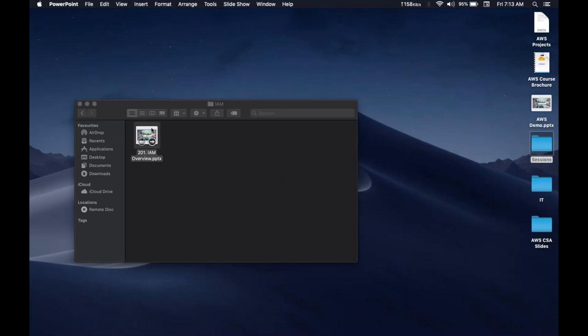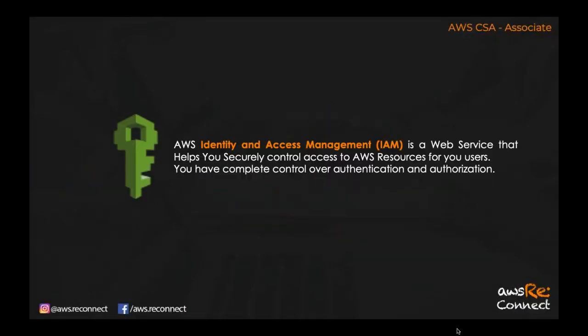We'll start our first topic: IAM. AWS IAM is a web service that helps you securely control access to AWS resources for your users — you have complete control over authentication and authorization. IAM is a management service from which you, as a head of your organization, can manage team members who access your AWS account. In the past, credentials were hardcoded in application code to connect to third-party services, but with AWS IAM we avoid that.